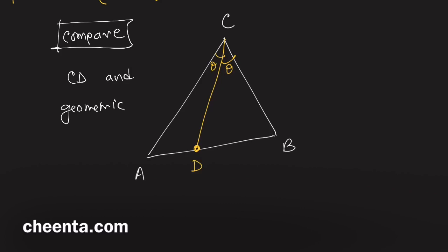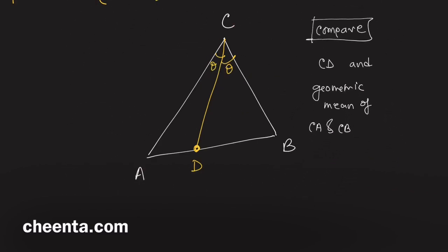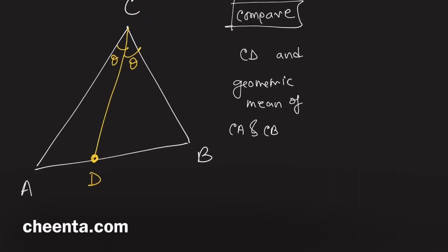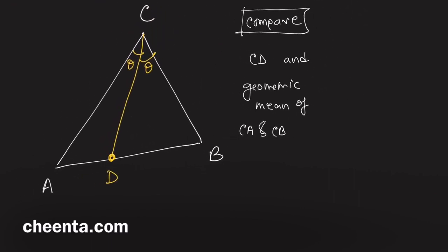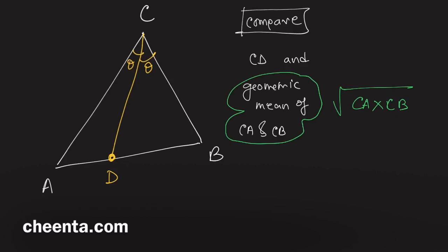The problem asks us to compare CD and the geometric mean of CA and CB. The geometric mean of any two numbers is the square root of the product of the two numbers. So the question is: can we say for certain that CD is equal to this, or that CD is greater than this?